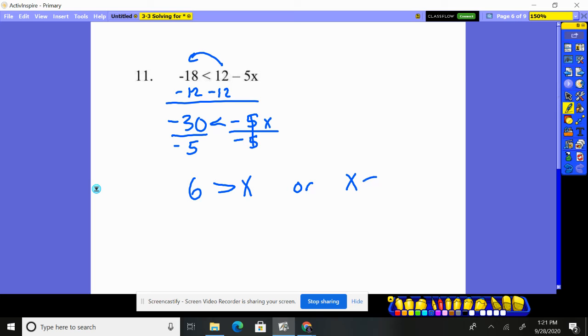Or you can put your x first. Notice x is smaller than the 6, so the alligator still stays eating the 6. So x < 6 is more preferred. x < 6 is the solution here to the problem. Any x smaller than 6 will make the equation true. So 5 or 4 or 3 or 2 - any of those plugged in there will make the equation true.